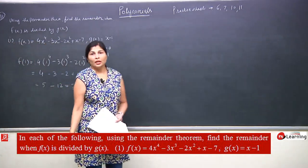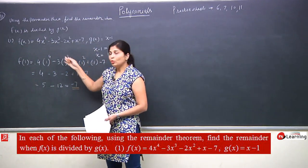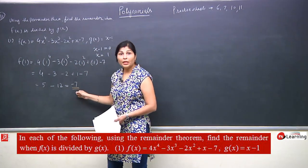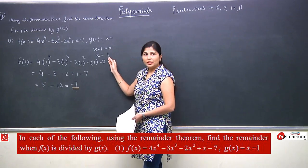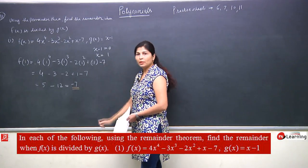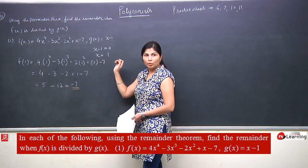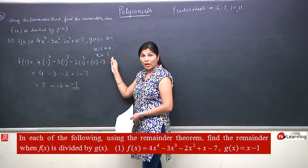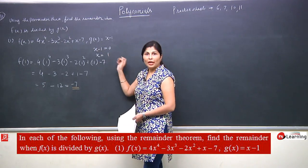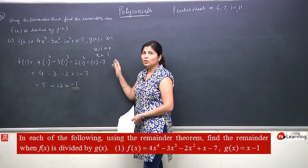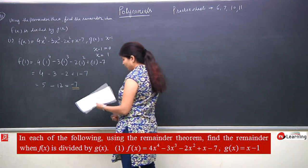This means x minus 1 is not a factor of this polynomial, or 1 is not a root. The remainder theorem says: if the value we put into the polynomial gives remainder 0, then it is called a root of the polynomial; otherwise it is not. So here, since remainder is not 0, 1 is not the root of this polynomial.